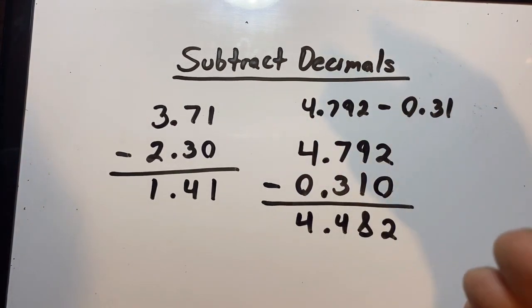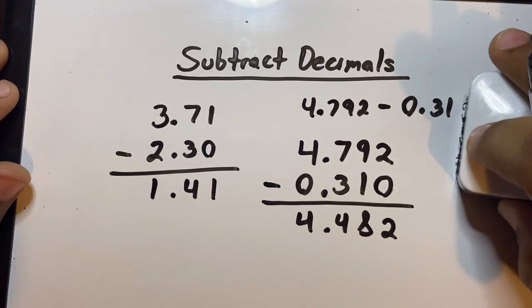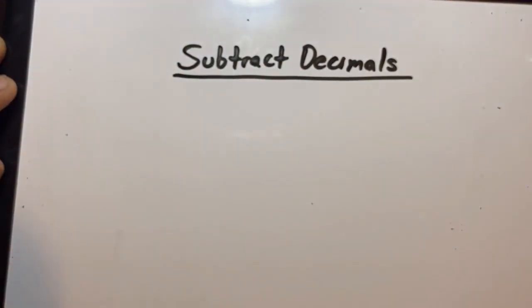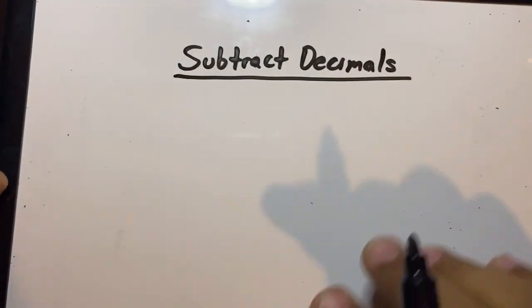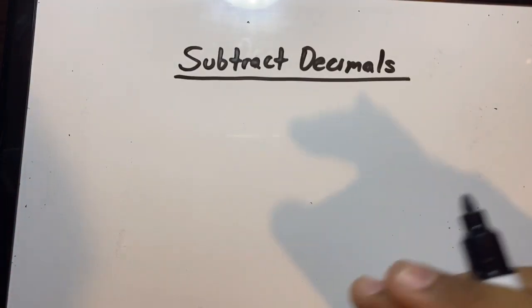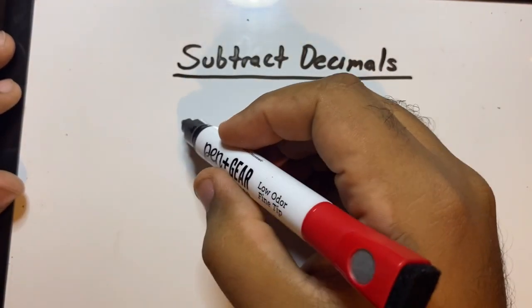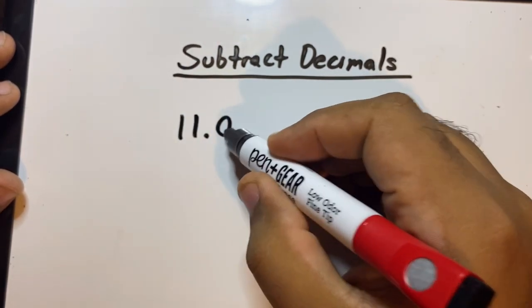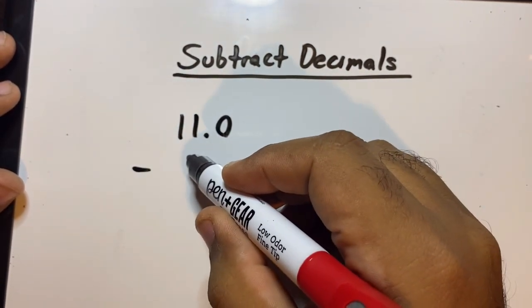You keep practicing, you keep doing your work, you keep asking questions. This will get easier for you over time. Okay, now the next thing I'm gonna give, let's say maybe two more questions. So let's make them a little higher. How about 11.0 minus 2.82?